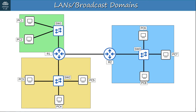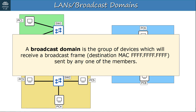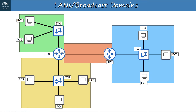So we've found three broadcast domains so far. However, there is one more. What if R1 sends a broadcast frame out of its interface connected to R2? It will be received only by R2. Even though this is a connection between only two devices, it is still technically a broadcast domain. So, do you understand what a broadcast domain is now? A broadcast domain is the group of devices which will receive a broadcast frame with a destination MAC address of all Fs, sent by any one of the members. In this network, there are four broadcast domains, and therefore four LANs.